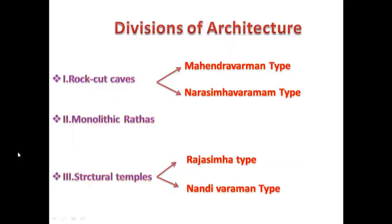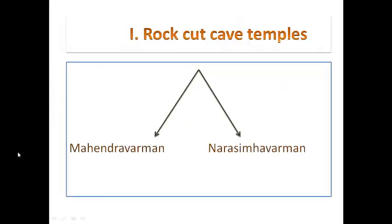The architecture of the Pallava period may be broadly divided into three divisions: Rock Caves, Monolithic Rathas, and Structural Temples. The Rock Cave temples are further divided into Mahendra Varman type and Narasimha Varman type. The Structural Temples are divided into Rajasimha type and Nandivarman type. First we are going to see about the Rock Cave temples.